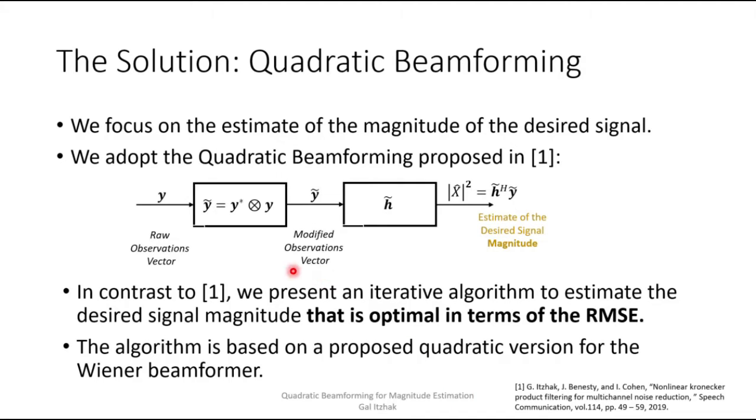So at first, we take the raw observation vectors, and by applying the Kronecker product between the complex conjugate of the raw observation vector to itself, we generate the modified observation vector Y tilde. Then we are able to generate an estimate of the desired signal magnitude by applying this quadratic beamformer H tilde to the modified observation vector Y tilde.